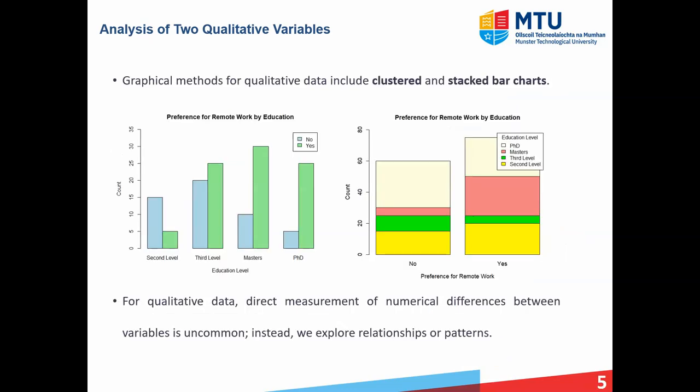In terms of analysis of qualitative variables, there are many different types of graphs. Looking at two specific examples: on the left-hand side, we have a clustered bar chart representing education level and preference for working remote. The categories are second level, third level, etc., and colors represent the preference. We can see that as a person's education level increases from second level up to PhD, they tend to prefer to work remote, indicated by the higher green bars.